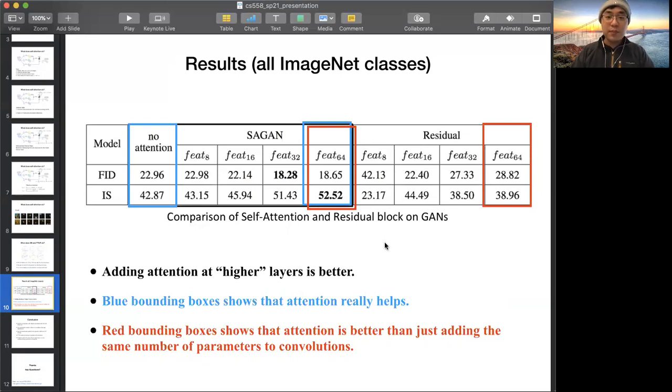Note that, this paper wants to solve the long-term dependency of the conventional convolutional. If you increase the number of filters or applied deeper network, it does help improve the performance. But on the other hand, it also lowers the computational efficiency. So here, if they use the same parameters, it means the 64 by 64 attention map. The results show that self-attention has a better performance.